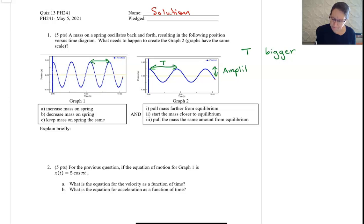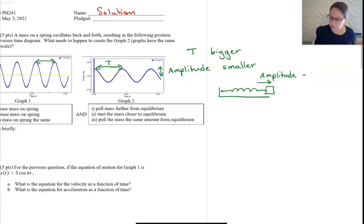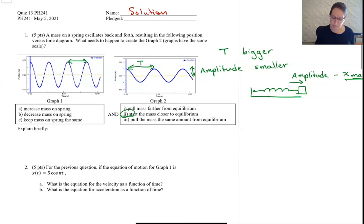To get a smaller amplitude, you pull the spring not quite as far, because the amplitude is your maximum x. You don't want to pull it as far, so you start the mass closer to equilibrium because you want this maximum to be smaller.